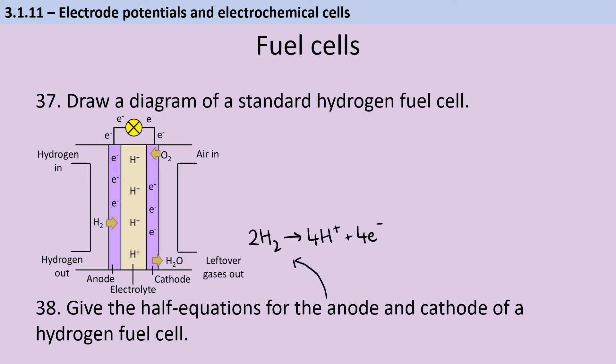So at the anode, we have 2H₂ making 4H⁺ and 4e⁻. And the reason that that needs to be doubled up like that is to make the electrons balance with our cathode. We've got oxygen reacting with water and those electrons to make hydroxide ions, which can then join back together with those hydrogen ions from the anode to make water, which is the waste product.